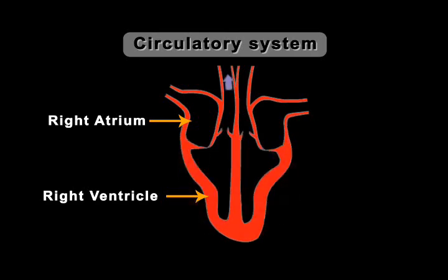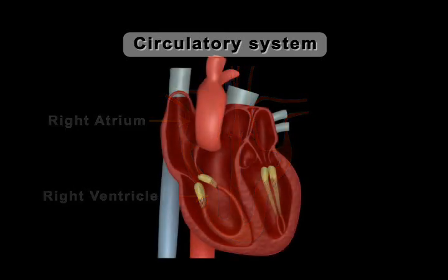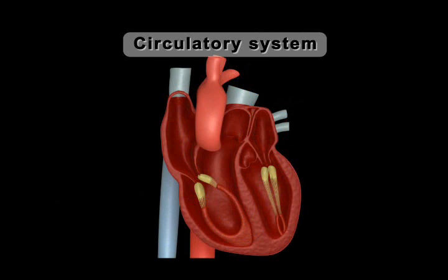The right ventricle contracts with the expansion of the right atrium to receive the blood through the one-way valve. The right ventricle then contracts, pushing the blood into the pulmonary artery, which carries deoxygenated blood to the lungs for oxygenation. The lungs oxygenate the blood and send it back to the heart, starting the circulatory cycle yet again.